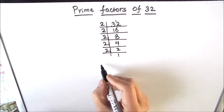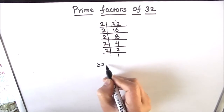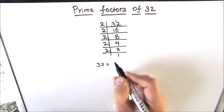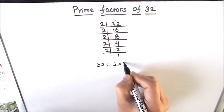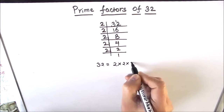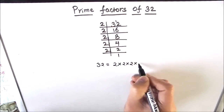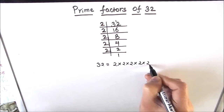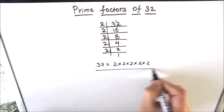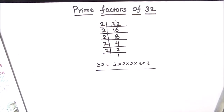So the prime factors of 32 are all the numbers on the left hand side of the ladder. So 2 times 2 times 2 times 2 times 2 are the prime factors of 32.